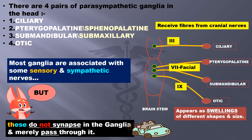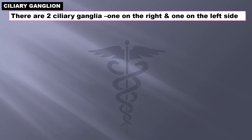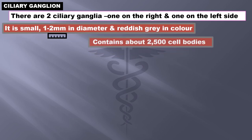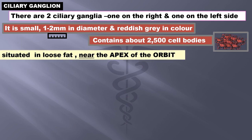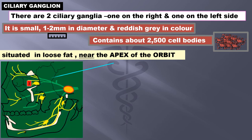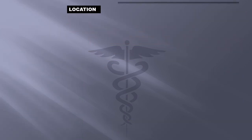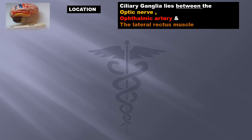Now let us get to the ciliary ganglia itself. There are two ciliary ganglia, one on the right side and one on the left side. It is small — one to two millimeters in diameter — and reddish in color. It contains about 2,500 cell bodies. It is situated in the loose fat near the apex of the orbit. The ciliary ganglia is made of cell bodies of multipolar neurons.